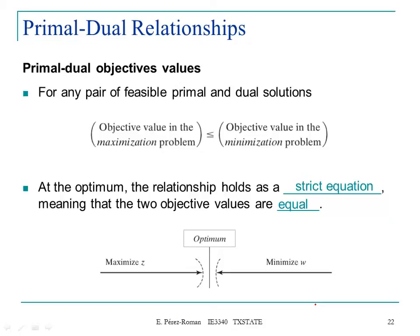When you look at the dual and the primal, depending on which one is maximizing and which one is minimizing, at some point they're going to be the same at the optimal. One will go from this side, the other one will go from the other side, but at the end, they'll hold that at the optimal value, the relationship is strictly equal.